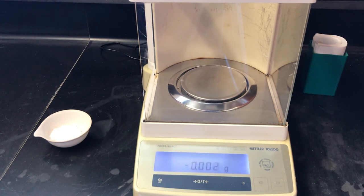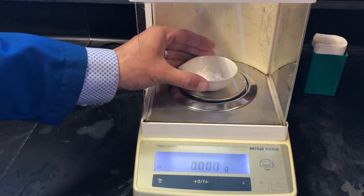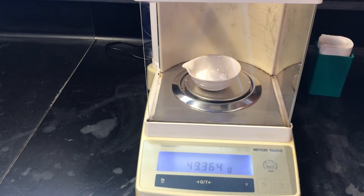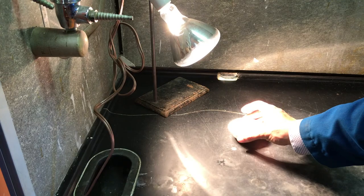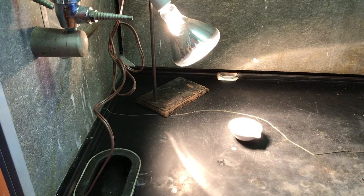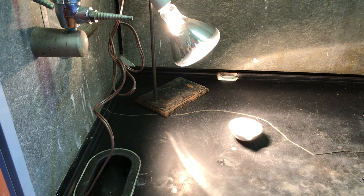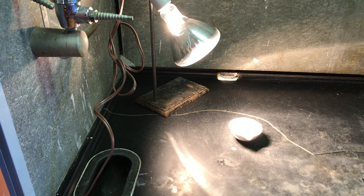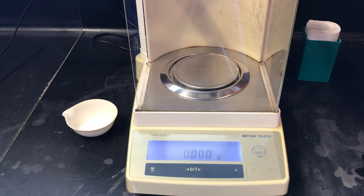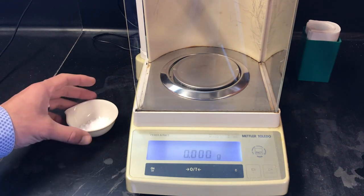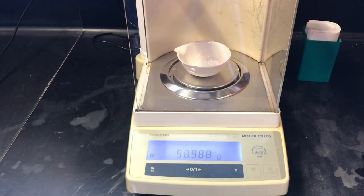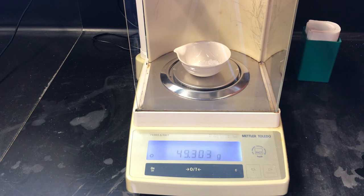After another 15 minutes, the mass of the alum after the third drying is 49.364 grams. The mass of the alum after the fourth drying is 49.302 grams. So we'll continue to dry our product.